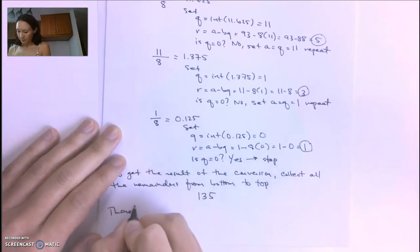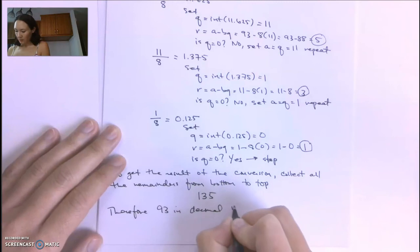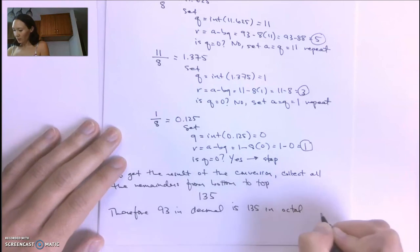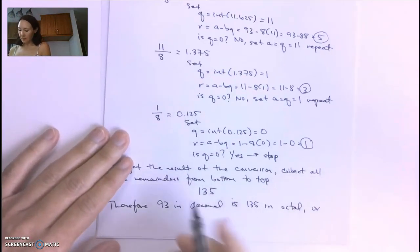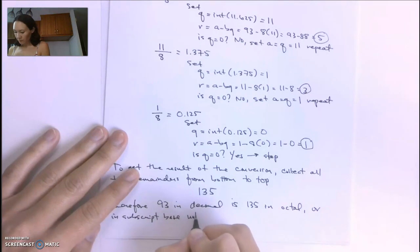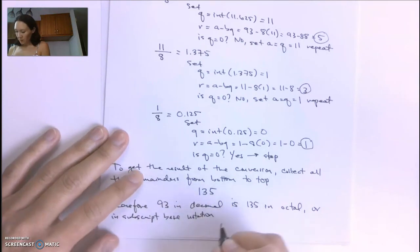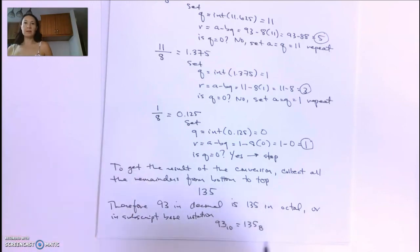Therefore, 93 in decimal is 135 in octal. Or in subscript base notation, 93 base 10 equals 135 base 8.